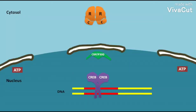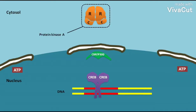In the cytosol of many animal cells, we can find a tetrameric inactive enzyme called Protein Kinase A. This Protein Kinase A has two regulatory subunits, denoted as R, and two catalytic subunits, denoted as C.